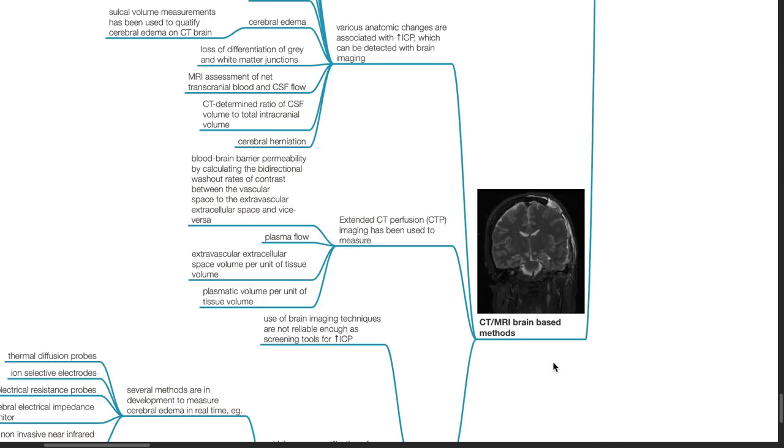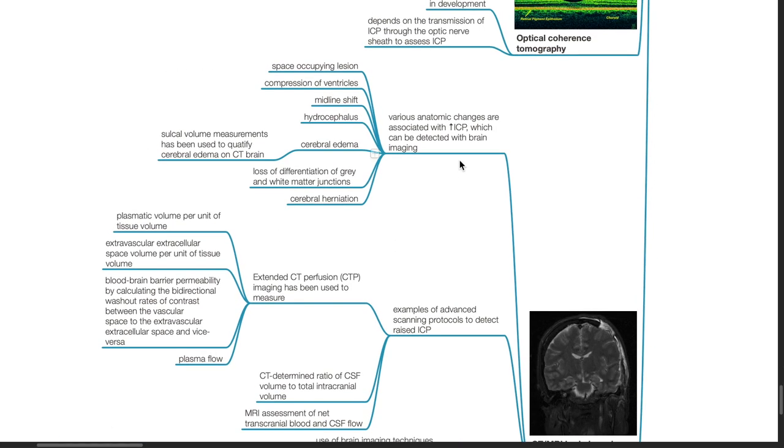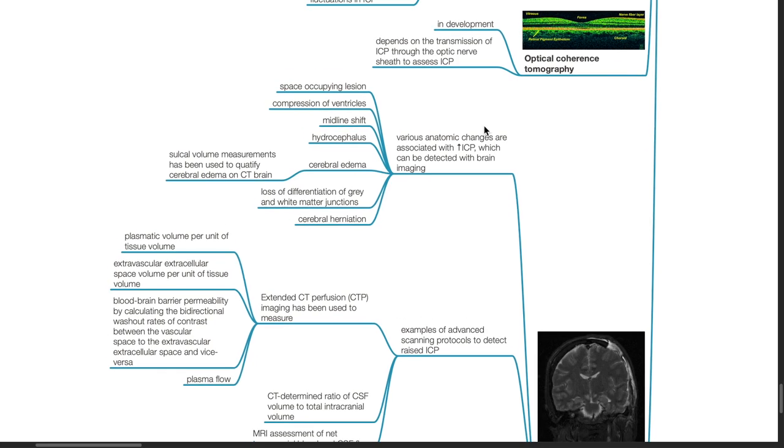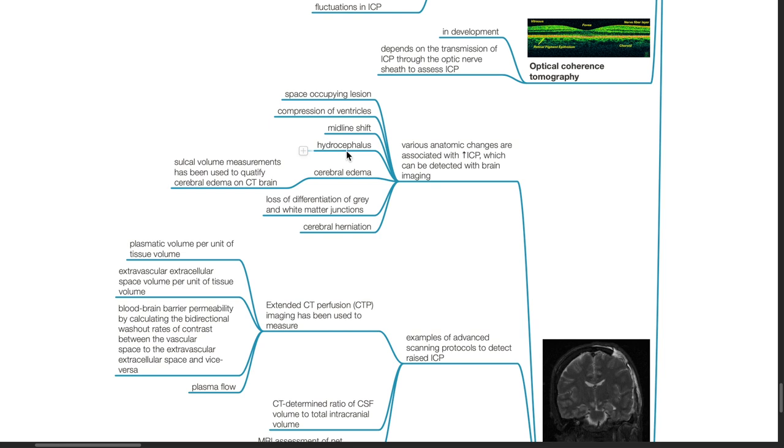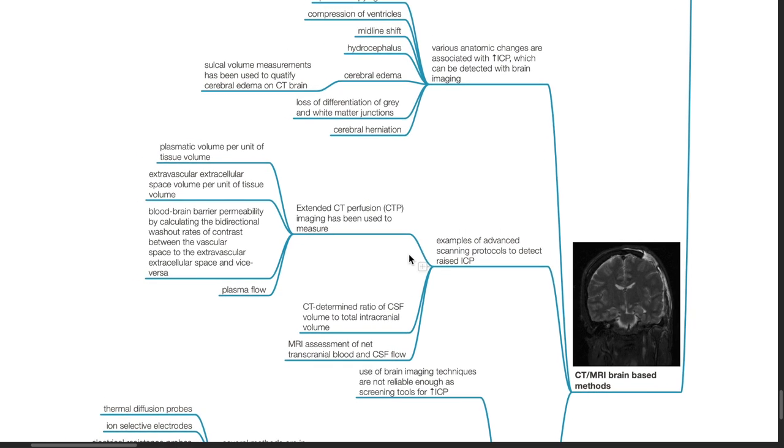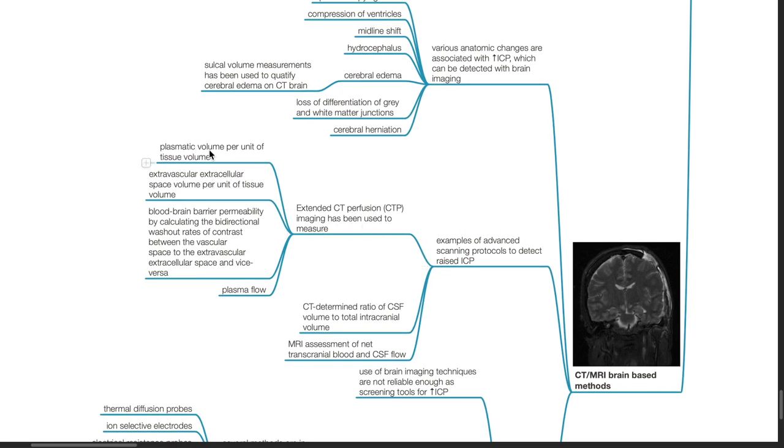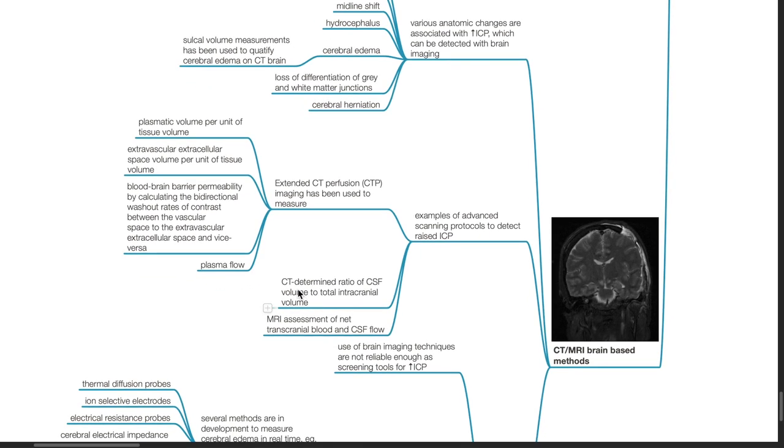CT or MRI brain based methods. Various anatomic changes are associated with raised ICP on brain scans such as space occupying lesion, compression of ventricles, midline shift, hydrocephalus, cerebral edema where sulcal volume measurements have been used to quantify cerebral edema in CT brain, loss of differentiation of grey and white matter junctions, and cerebral herniation. Examples of advanced scanning protocols to detect raised ICP: extended CT perfusion imaging has been used to measure plasmatic volume per unit of tissue volume, extravascular extracellular space volume per unit of tissue volume, blood-brain barrier permeability by calculating the bidirectional washout rates of contrast between the vascular space to the extravascular extracellular space and vice versa, and plasma flow. CT determined ratio of CSF volume to total intracranial volume, and MRI assessment of net transcranial blood and CSF flow.